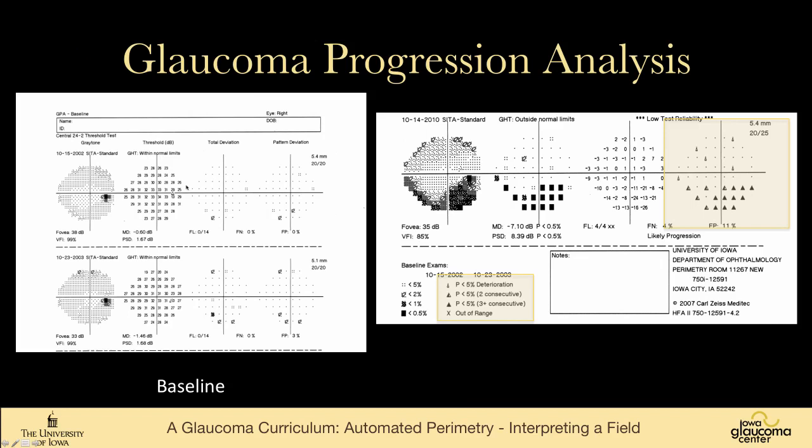There is a glaucoma progression analysis. It takes two baseline visual fields, usually not the first field, because the first field has a learning effect. So these two fields were done in 2002, 2003, and this was from 2010, and it assigns probability of progression to all of the points. So you can see, for example, that this point, there's a less than 5% chance that it's worse, in other words, it's worse with the less than 5% likelihood that that's a false assumption, and that's been on three consecutive visual fields. So this point is worse, and it's been consistently worse over time.